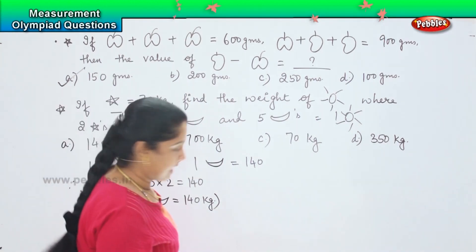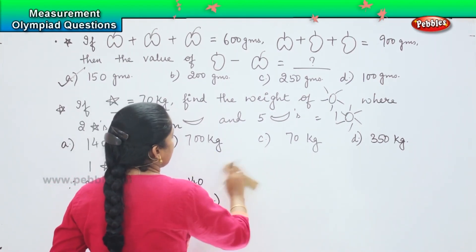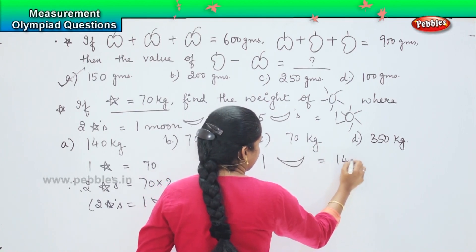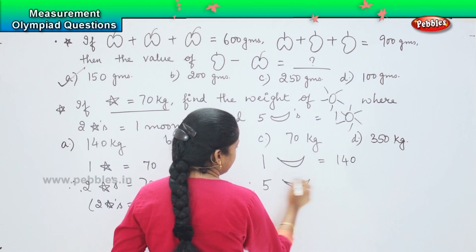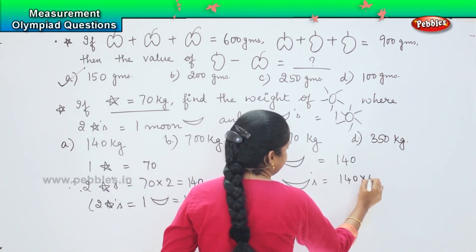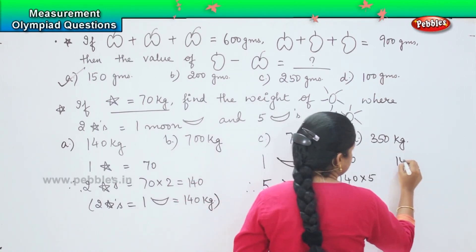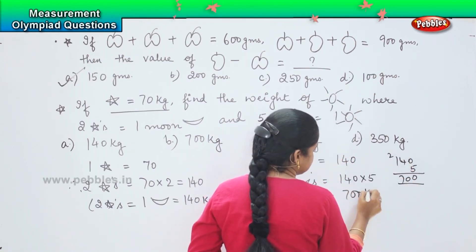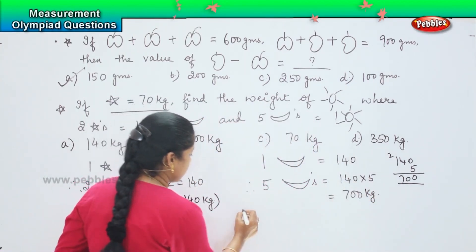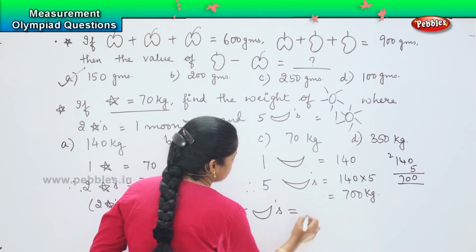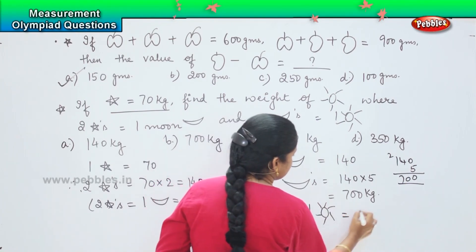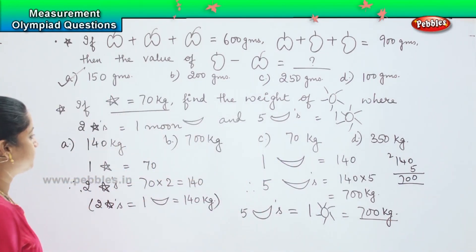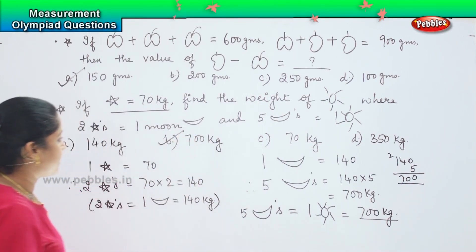Now, the second equation says that five moons equals one sun. So I know the value of one moon equals 140. Therefore, five moons equals 140 into 5 which is how much? We will multiply and see. 4 fives are 20, 1 fives are 5, 5 plus 2 is 7 which equals 700 kg, and they have given the equation as 5 moons equals 1 sun equals 700 kg. So where do you find 700 kg children? This is option B. So which means option B is my right answer.